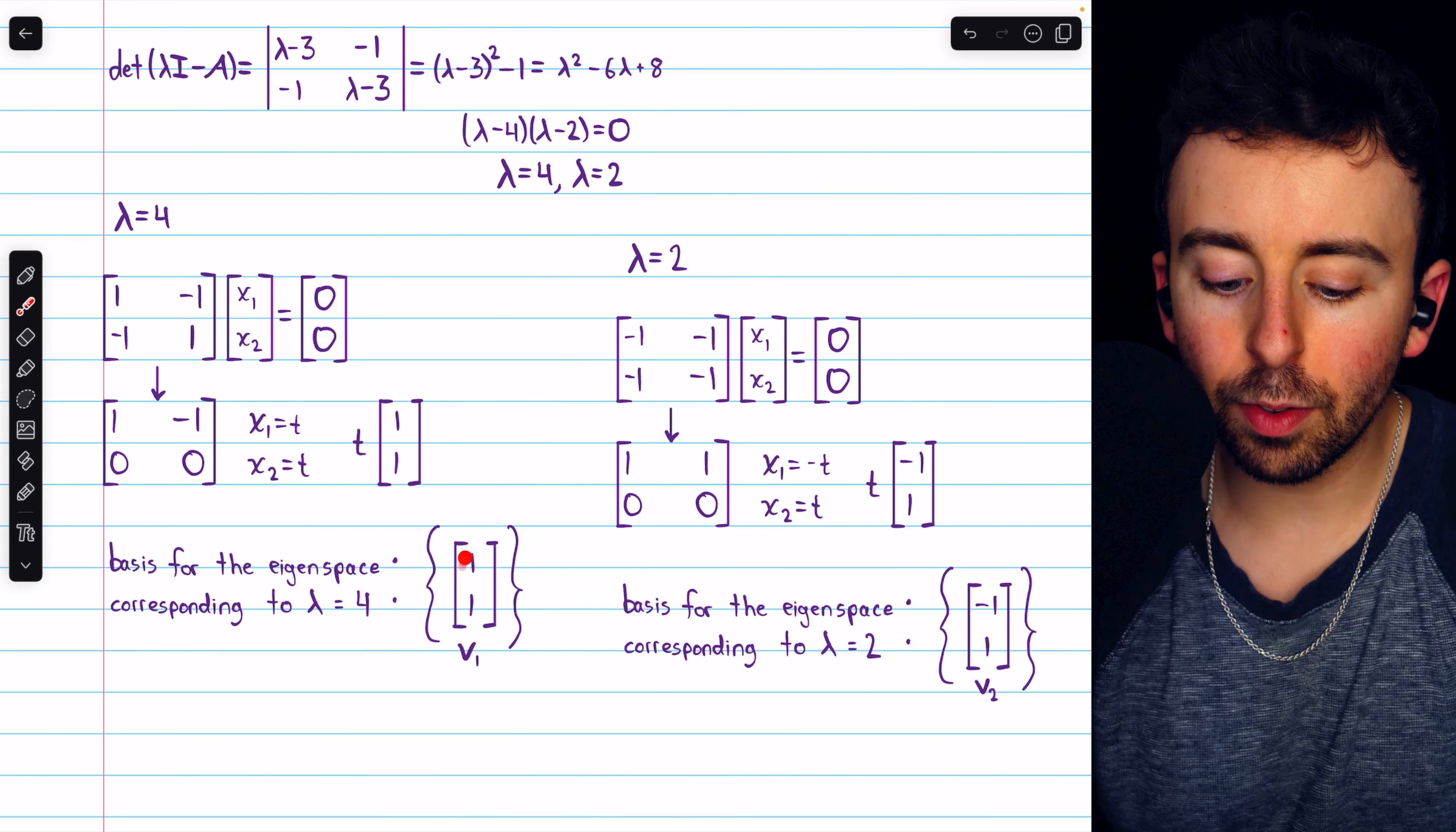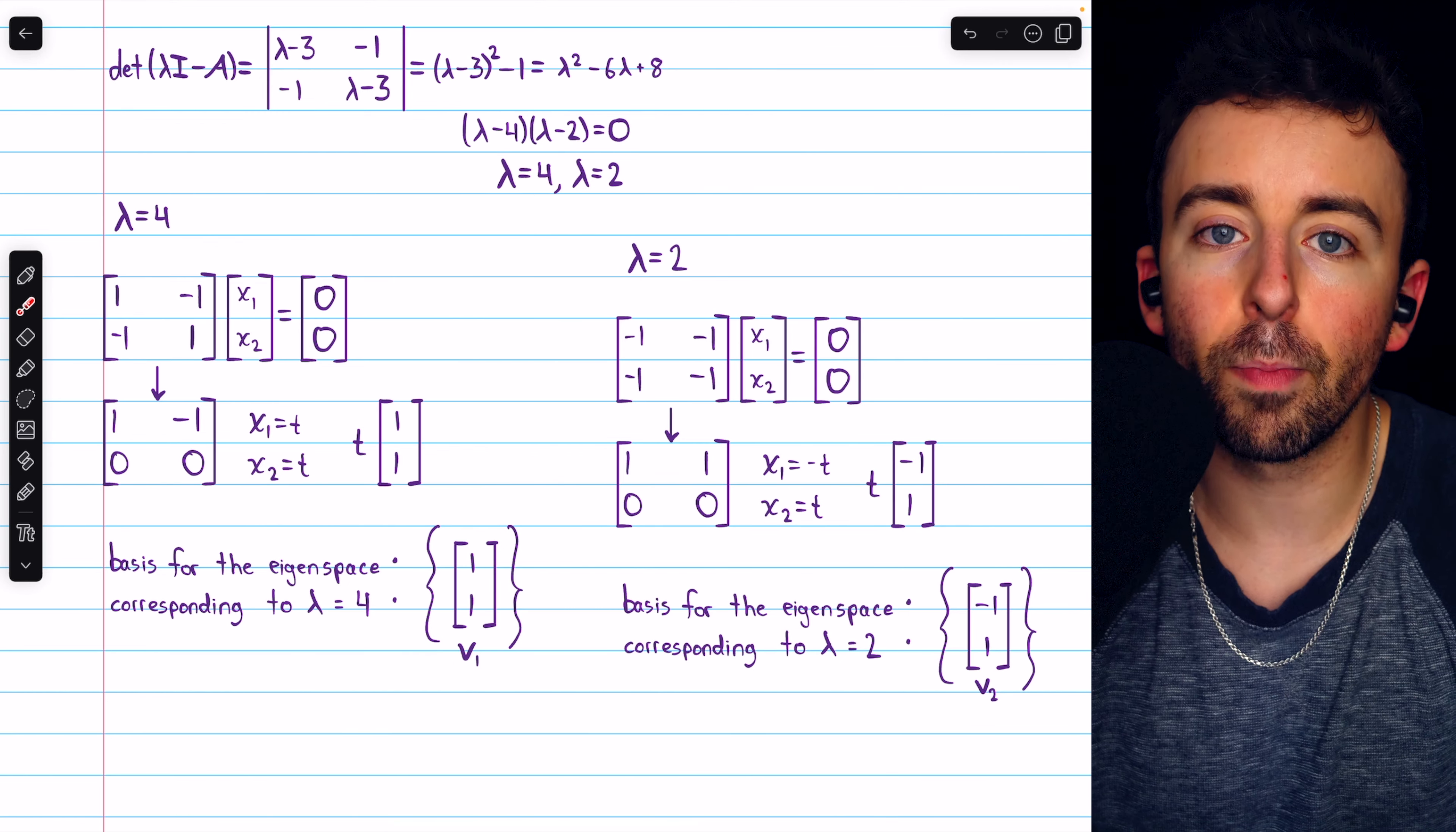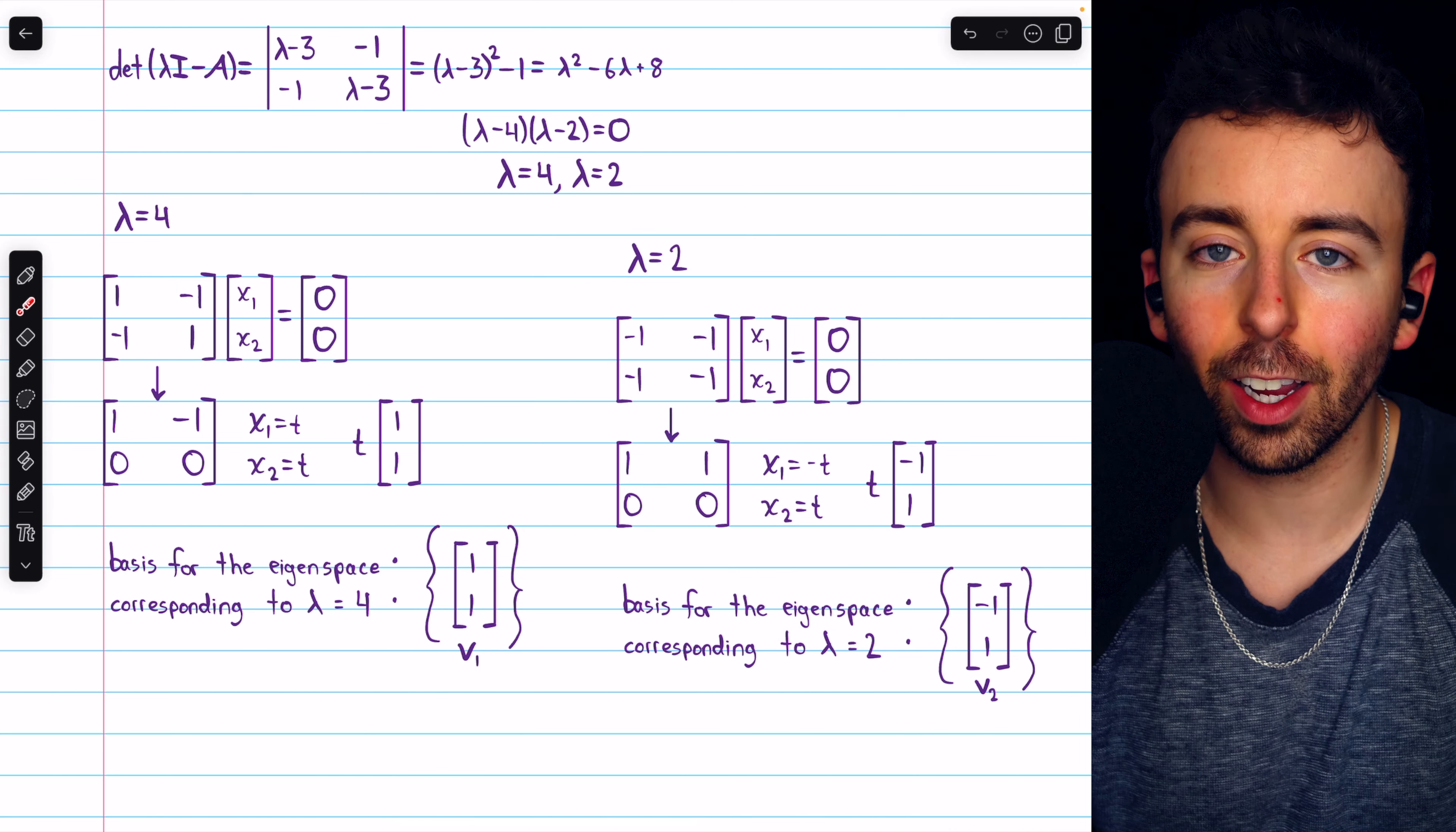Alright, so we have two eigenvectors. They are from different eigenspaces, so we know they're linearly independent. And also, we know that they're already orthogonal, because they're basis vectors for distinct eigenspaces. Link in the description to the video where we proved that's true. Basis vectors from distinct eigenspaces are orthogonal.